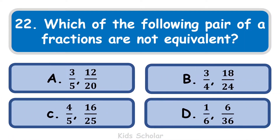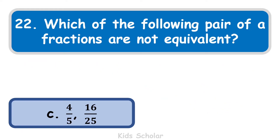Next question is: which of the following pairs of fractions are not equivalent? The options are: A) 3 by 5 and 12 by 20, B) 3 by 4 and 18 by 24, C) 4 by 5 and 16 by 25, D) 1 by 6 and 6 by 36. When you convert each fraction to its smallest term, the correct answer is C — 4 by 5 and 16 by 25 — because when you simplify 16 by 25, you do not get 4 by 5, so they are not equivalent.